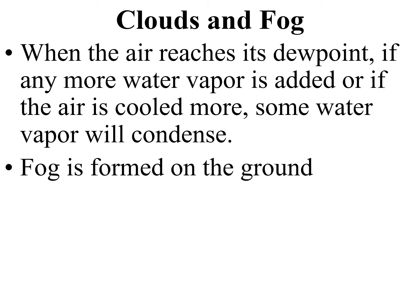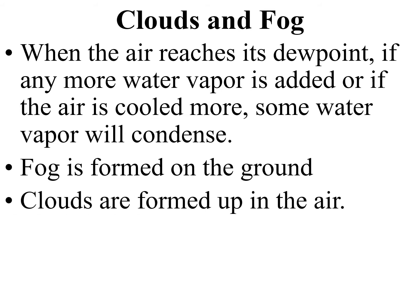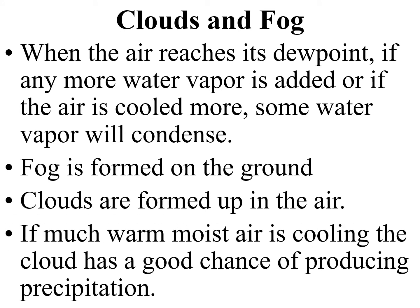If condensation occurs, on the ground you will have fog. Up in the air, clouds will form. So if there is a great amount of warm moist air cooling, the cloud has a good chance of producing precipitation. But just reaching its dew point and cooling beyond that produces fog or clouds. Precipitation is something else.